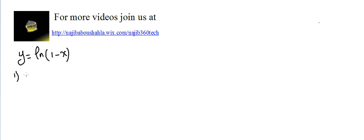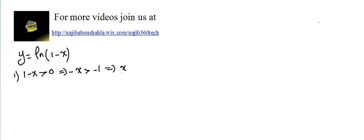First, we have to find the domain of definition. u(x), which is 1 - x, should always be greater than 0. This means that -x is greater than -1, so x is always less than 1.